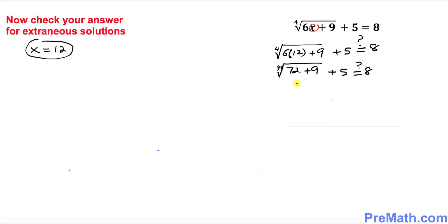So this becomes 81. 72 plus 9 is 81, fourth root, plus 5. Is it equal to 8?